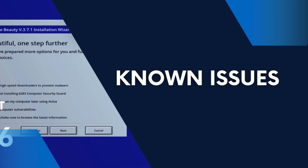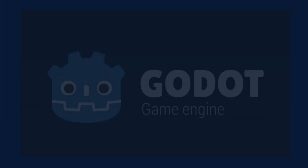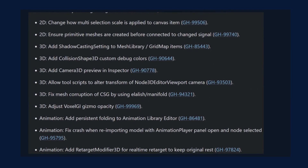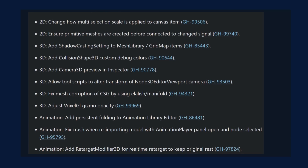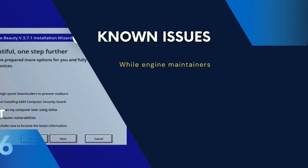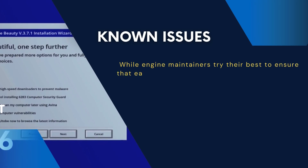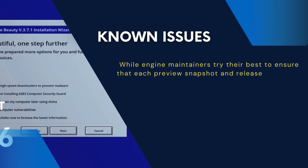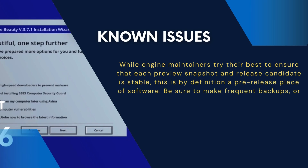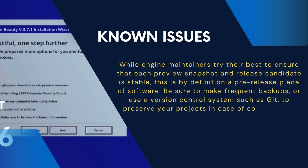The goal here is to let the community test these features, find bugs, and provide feedback to the Godot team. This helps ensure that the stable release is polished and ready for production. It clearly states on the website that while engine maintainers try their best to ensure each preview snapshot is stable, this is by definition a pre-release piece of software. Be sure to make frequent backups or use a version control system such as Git to preserve your projects, in case of corruption or loss of data.